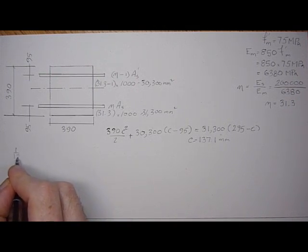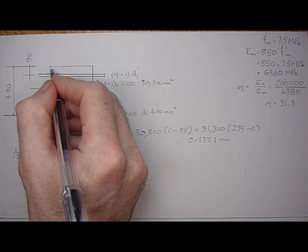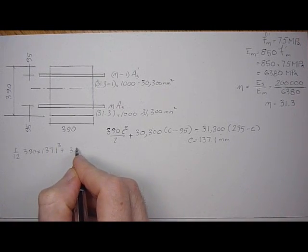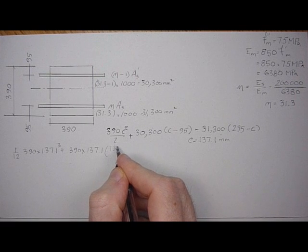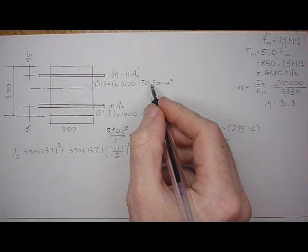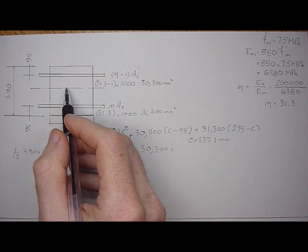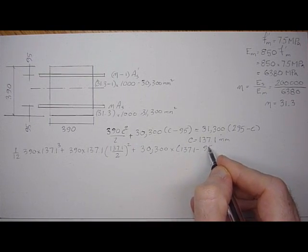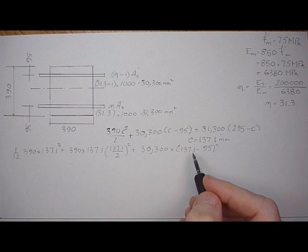So that would be 1/12 times base times the height cubed, and the height is 137.1 for this area here. Plus the A·d squared term, which is 390 times 137.1 times (137.1 over 2) squared, plus the A·d squared of the compression steel times its d squared, which is (137.1 minus 95) squared.